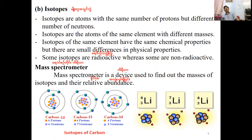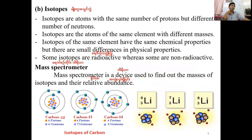The notation for isotope uses the element symbol with atomic number and mass number. For example, atomic number is 7 and mass number is 8. Atomic number represents the number of protons.